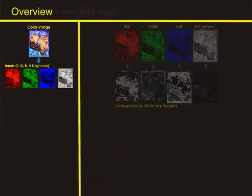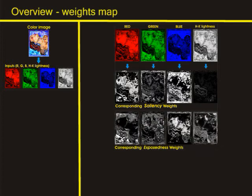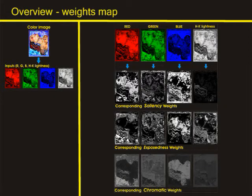For each of these inputs we define three weight maps to ensure that local contrast effects are simultaneously accounted for. Our first weight measure aims to preserve the original saliency. The second weight map advantages the well-exposed regions, while the chromatic weight map enhances the color contrast in addition to the effect of the HK input.